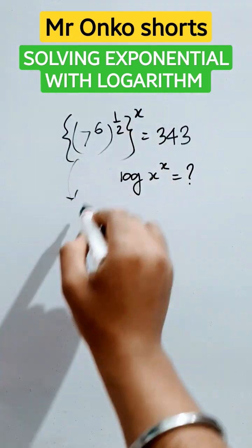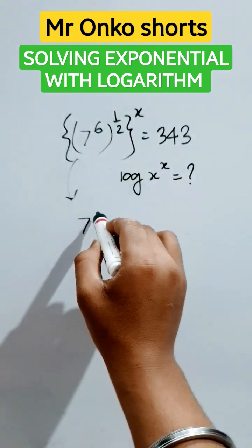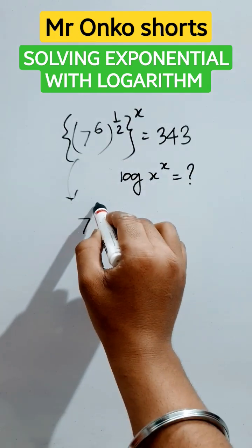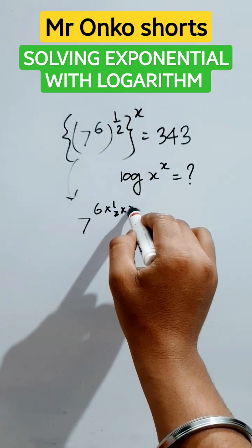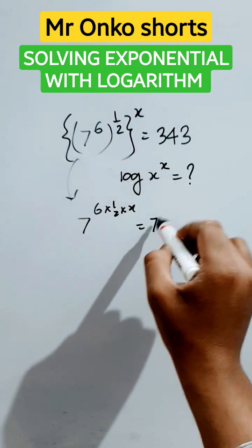According to the indices law, this is 6 into half into x. That will be 6 into half into x equals 3. 243 is 7 cube, so it will be 3.